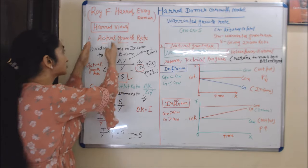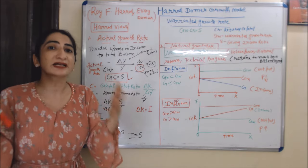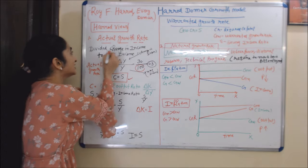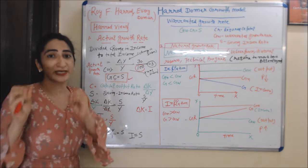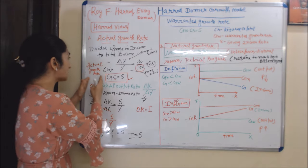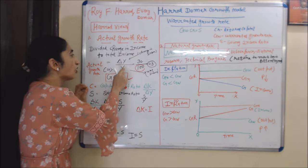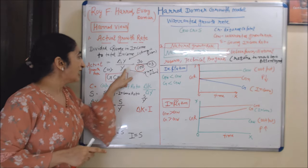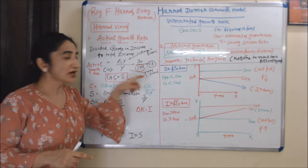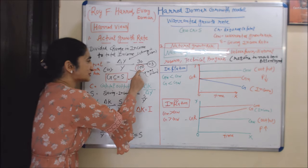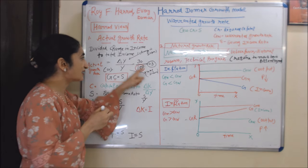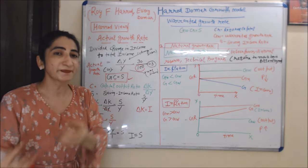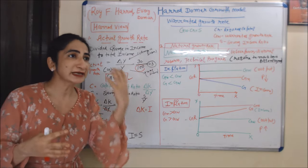Firstly, actual growth rate. We can get the actual growth rate by simply dividing change in income by total income. The formula is ΔY over Y, where ΔY is change in income and Y is total income. For example, if total income is 100 and change in income is 30, the actual growth rate will be 0.3.